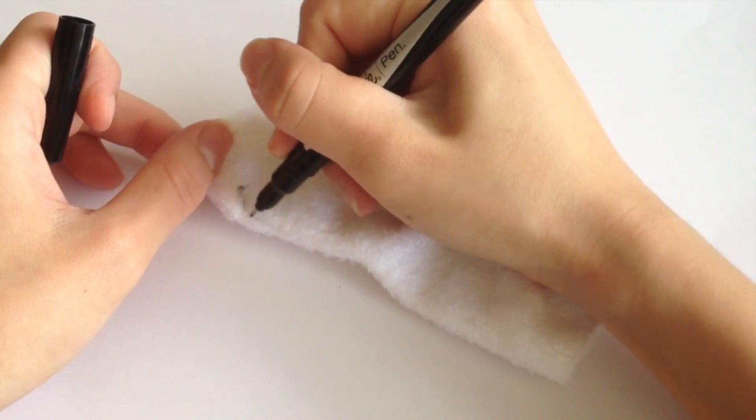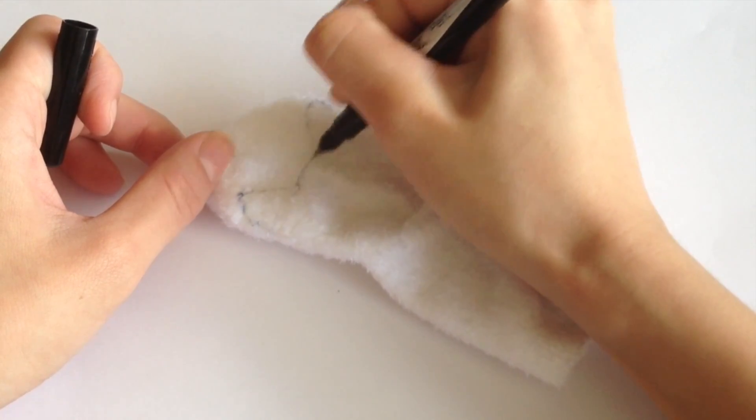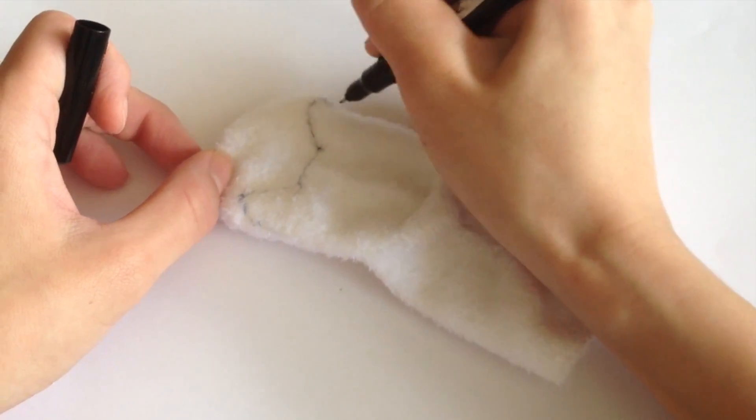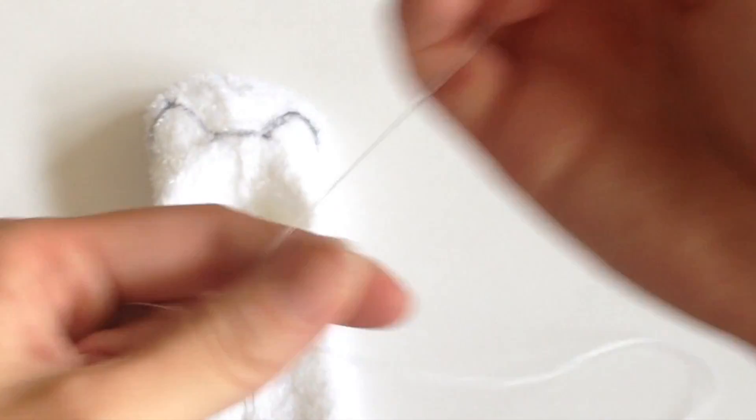A few inches above the heel of the sock you're going to draw the two ears of your little cat character. As you can see I'm using a black sharpie but don't worry, you're going to sew this and when you turn it inside out you won't be able to see it.